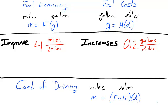Suppose that the price of gas increases by 0.2 gallons per dollar in August, and you drove with more caution in August, causing your fuel economy to improve by 4 miles per gallon. How would you expect your cost of driving, the miles per dollar, to change?